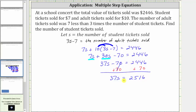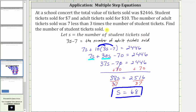The last step is to multiply or divide to solve for S. Since 37S means 37 times S, we divide both sides by 37. 37 divided by itself simplifies to one, and one times S is S. S is equal to 2,516 divided by 37, which is equal to 68. Since S is the number of student tickets sold, we know 68 student tickets were sold.